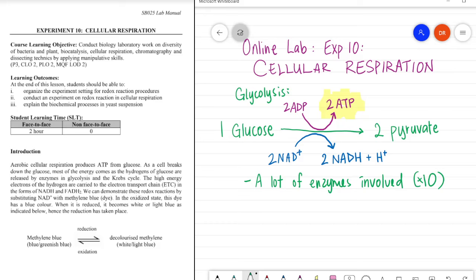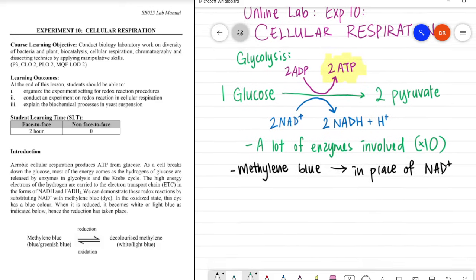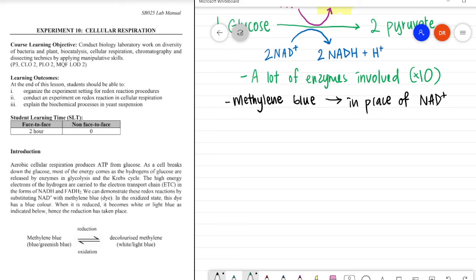In this experiment, we'll be substituting NAD plus or NADH with this thing called a methylene blue solution. So this methylene blue dye is used in place of NAD plus. And during this experiment, we're going to see whether this methylene blue is being reduced or being oxidized. Speaking of which, before I go on with the rest of the lesson, let's have a go through what is oxidation and what is reduction.